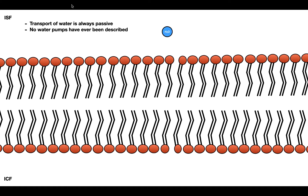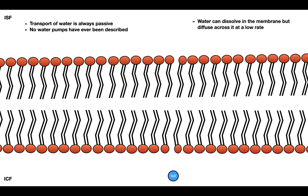It's important to realize that water is a small molecule. Therefore, water can actually dissolve in the plasma membrane and slowly diffuse through it. Now it's important to realize that even though water can passively diffuse through the plasma membrane, it does so only at a slow rate. Therefore, the cell has to have a mechanism that it can use in order to increase the water's permeability and therefore increase the rate of diffusion.